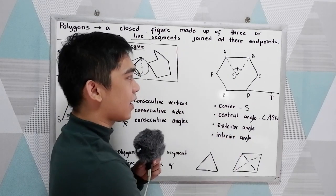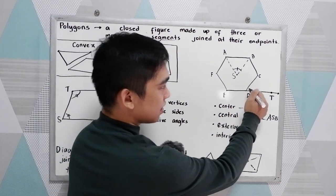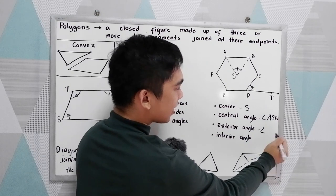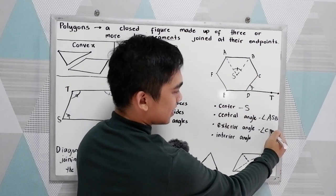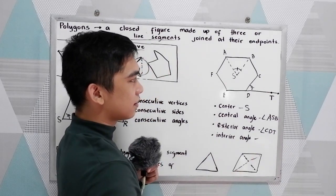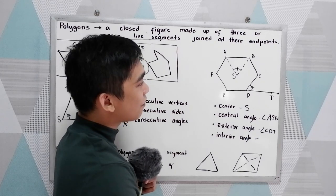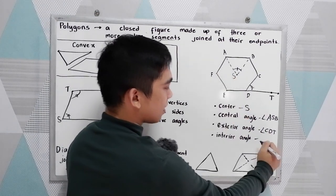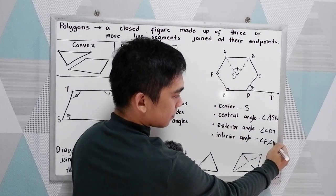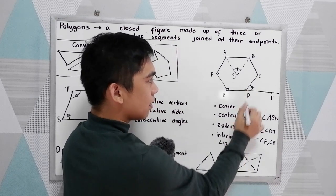The exterior angle is an angle located outside the polygon. In this case, the exterior angle is angle CDT. Interior angles are the angles located inside the polygon. We have a lot of angles here — angle F, angle E, angle B, and angle C.